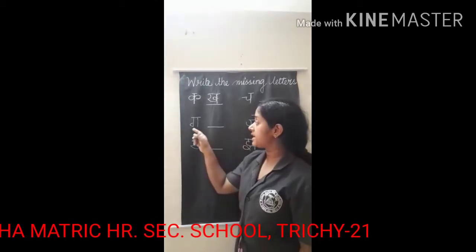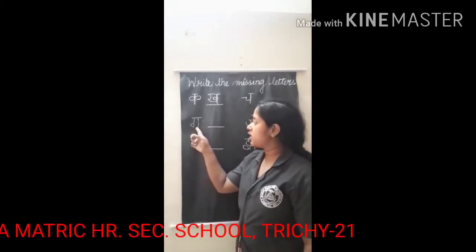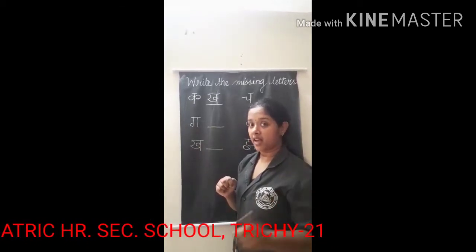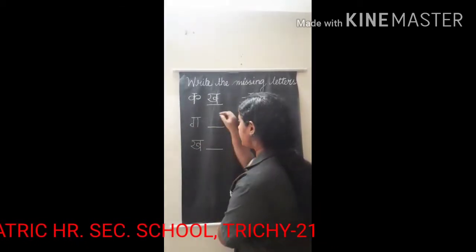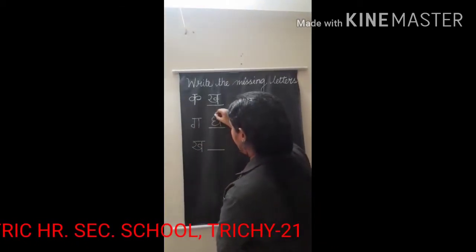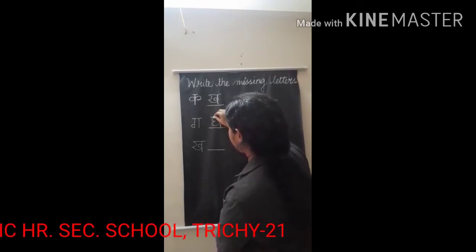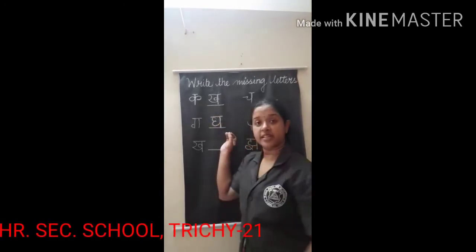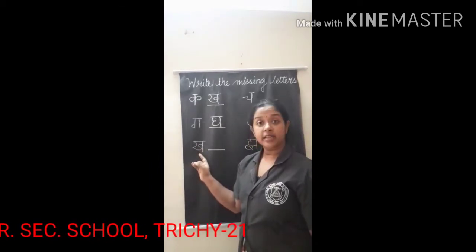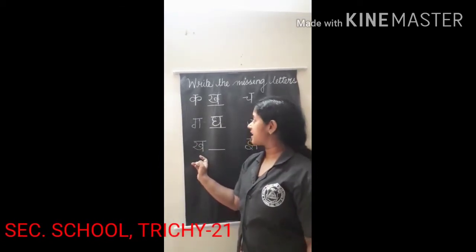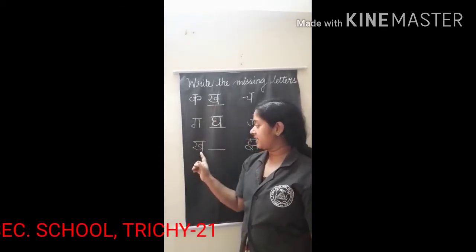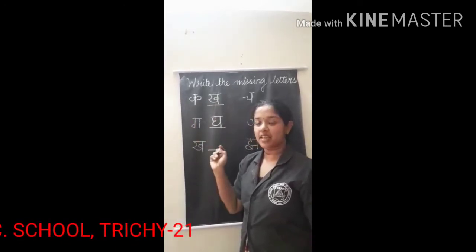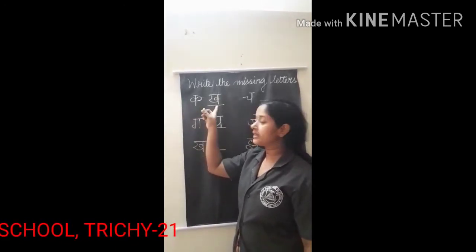Next consonant is given, and after it we write the next Vyanjan. See here — the answer is right here. After each given consonant, the next one follows in order. The answer is here only — look, you can see it.